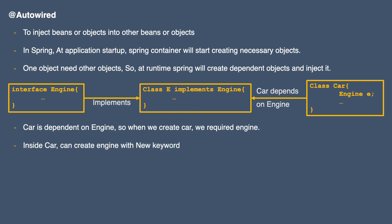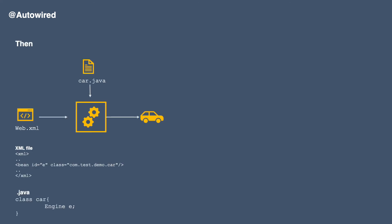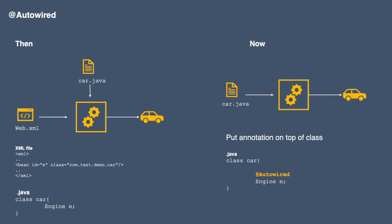We could create the engine object inside the Car class with the new keyword, but this is not the right approach because it would create a new object every time we use the Car class and it would be tightly coupled. So we need to inject the Engine bean into the Car class at runtime. In the old days, when the application started the Spring container would read the XML file and based on its configuration would create and inject the objects. But now we can do the same thing with this annotation — just put it on top of any class and you're done.